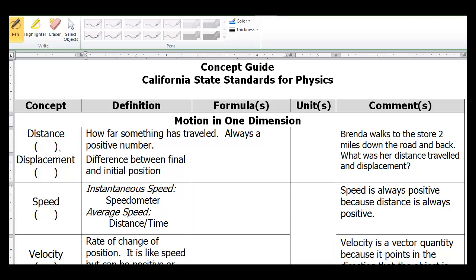We're going to start with the concept of distance. The symbol we can use for distance is D. Defined as how far something has traveled, it's always a positive number. It's just the distance between two points. We can measure distance in many different units: meters, miles, feet, kilometers, etc.